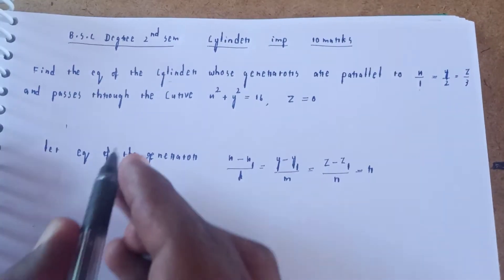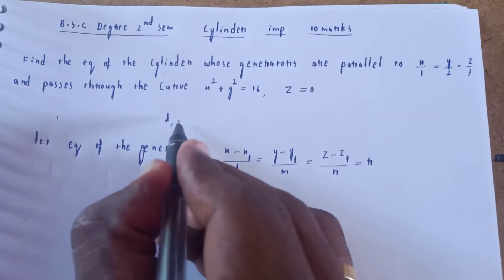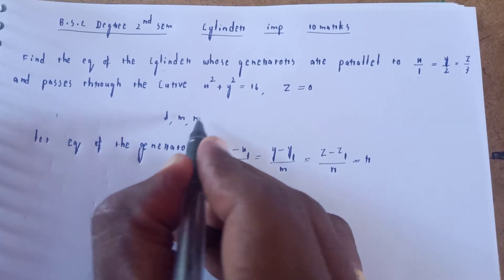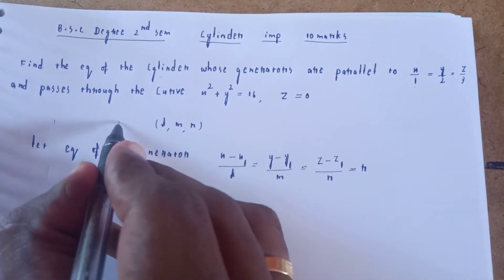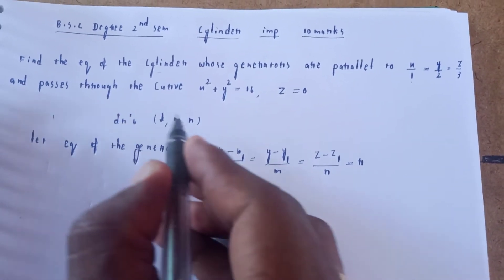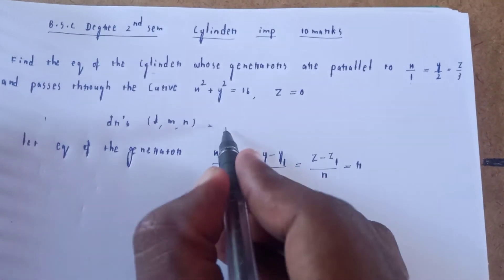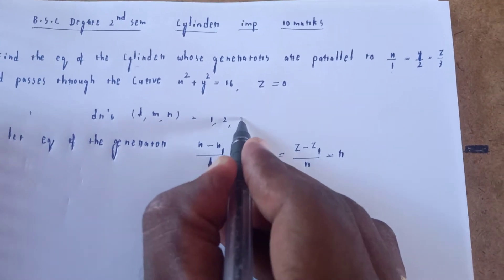The direction ratios l, m, n are given. The direction element is equal to 1, 2, 3.